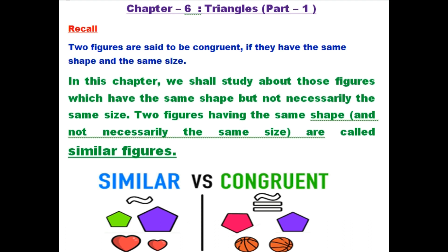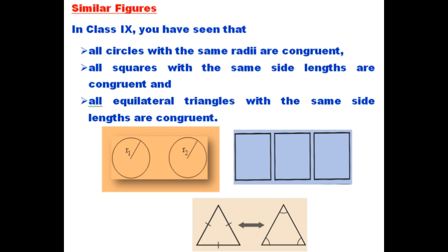Two figures having the same shape but not necessarily the same size are called similar figures. See the difference between similar and congruent: for similar figures, shapes are same but size is different. For congruent figures like these pentagons, both have same shape and same size, so they are called congruent. Note the symbol for similar, and for congruent you add an equal sign to the similar symbol.